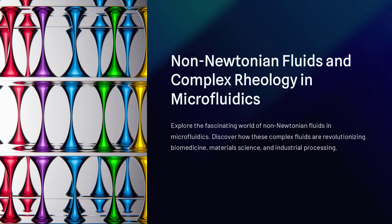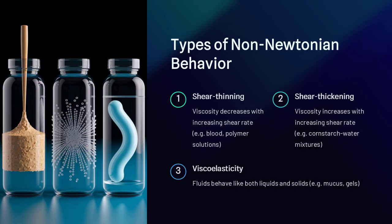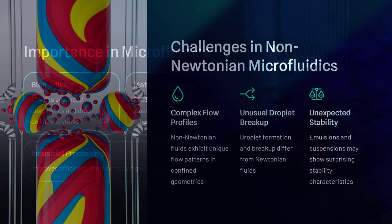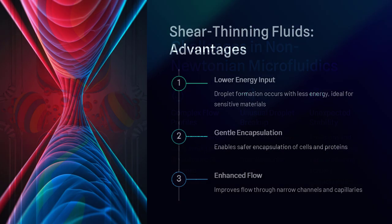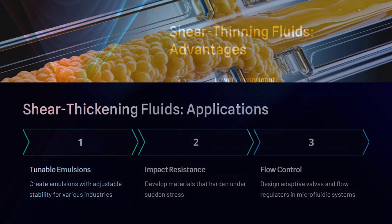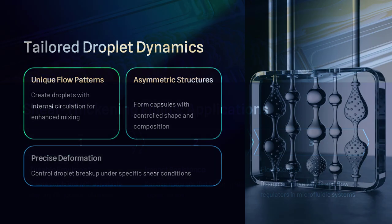While much of microfluidics research has traditionally focused on Newtonian fluids — those with a constant viscosity regardless of shear rate, such as water — there is growing interest in non-Newtonian fluids, which display dynamic viscosity changes under flow conditions. These fluids exhibit behaviors like shear thinning, where viscosity decreases with increasing shear rate, as seen in blood and polymer solutions.